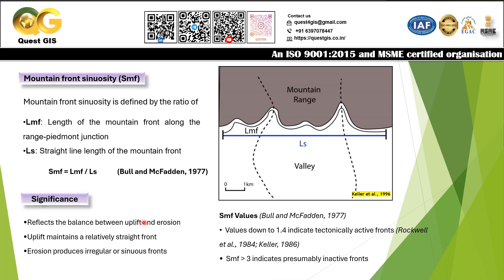What does Smf reflect? It actually reflects the balance between uplift and erosion. Uplift maintains relatively straight fronts, because if uplift is dominant, rivers and the hydrological system do not have time to erode these fronts and form curvatures. If erosion is dominant, it produces irregular or sinuous fronts.